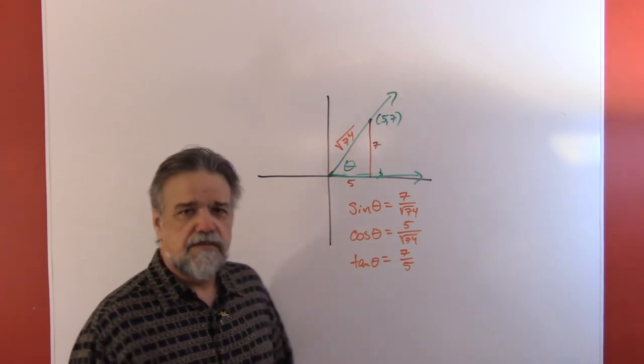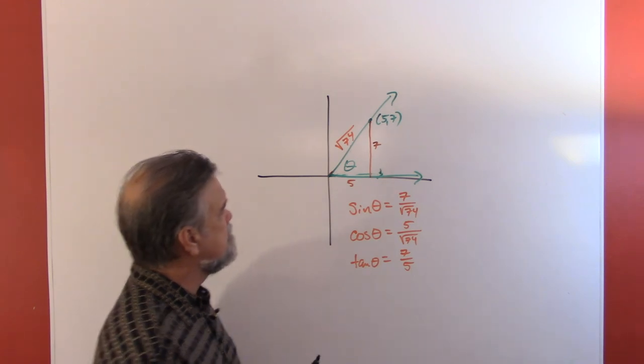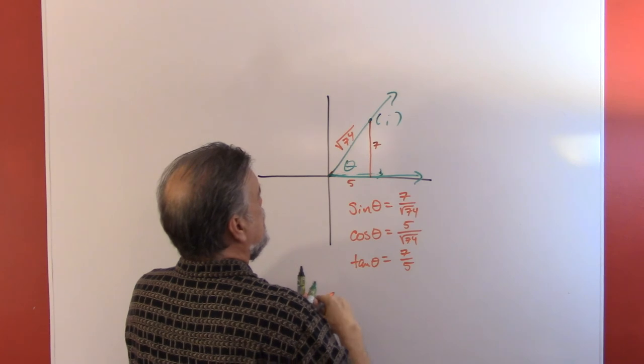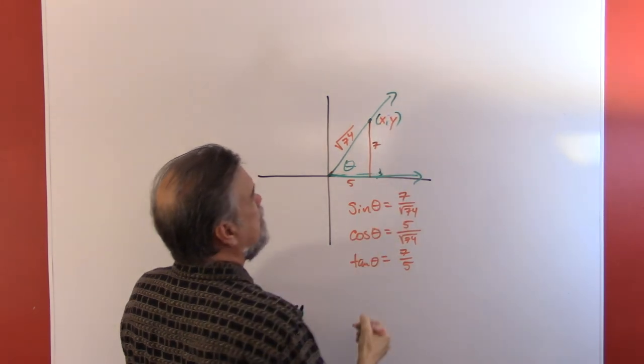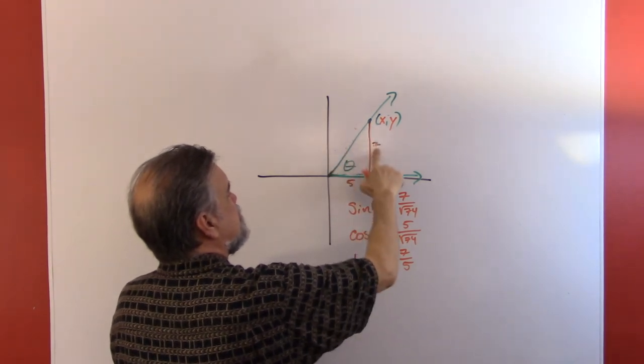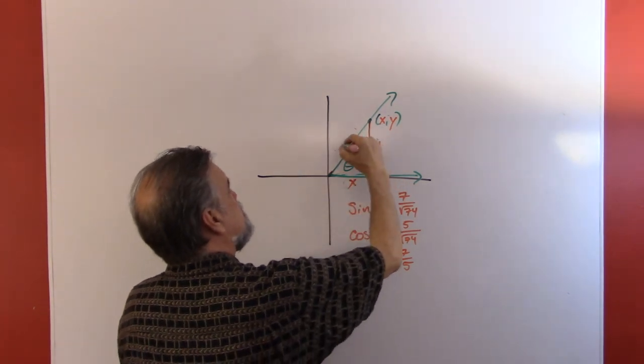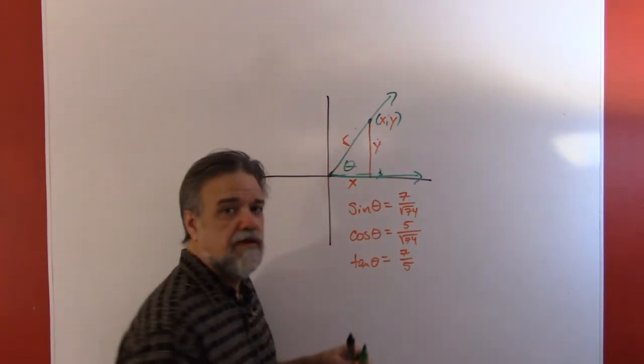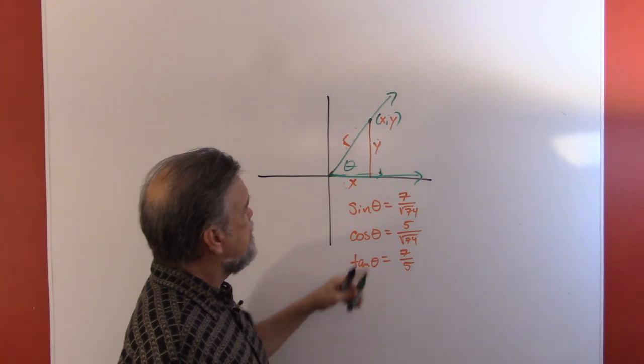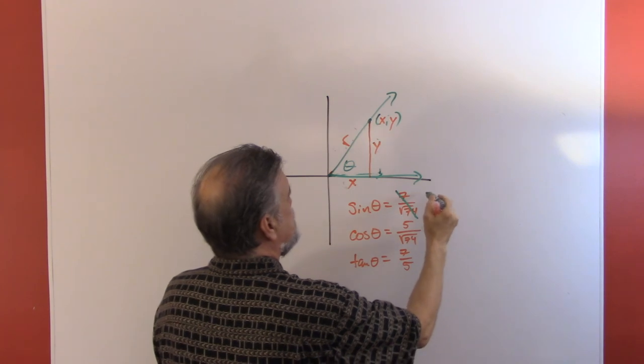Let's look at that and say, okay, instead of calling this (5, 7), we're going to call it (x, y). This will be y, this will be x. Instead of calling this the square root of 74, this is going to be r, where x squared plus y squared is r squared. That means the sine of theta, instead of being 7 over the square root of 74, we're going to say it's equal to y over r.